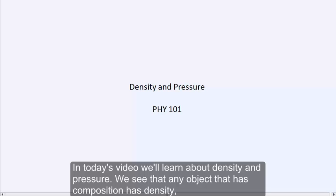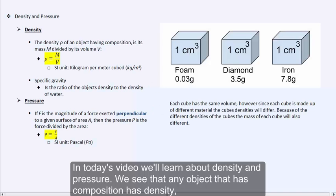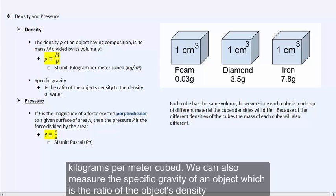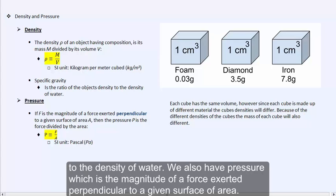In today's video, we will learn about density and pressure. Any object that has composition has density. We measure density as the mass of the object divided by its volume, expressed in units of kilograms per meter cubed. We can also measure the specific gravity of an object, which is the ratio of the object's density to the density of water.